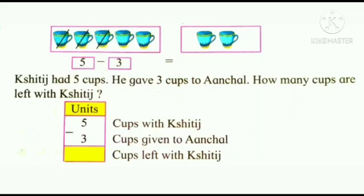Let us solve the word problem which is given in your maths textbook on page number 27. Shithij had 5 cups. He gave 3 cups to Achal. How many cups are left with Shithij?